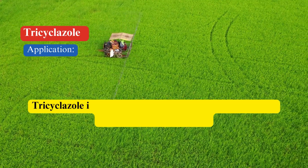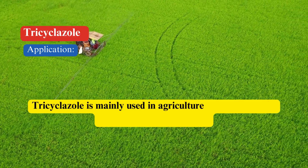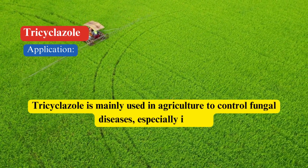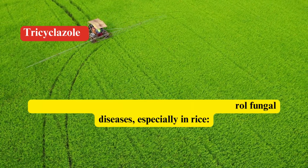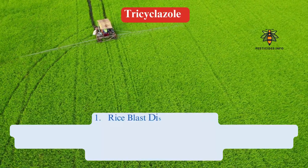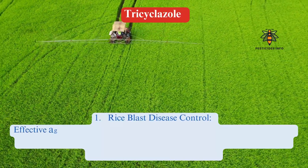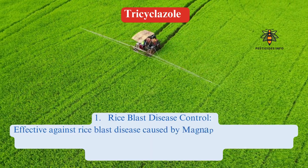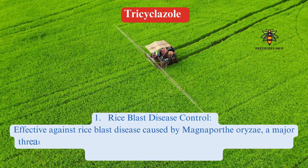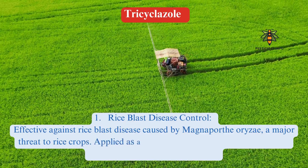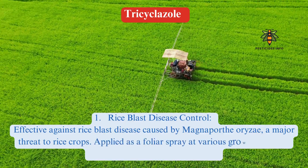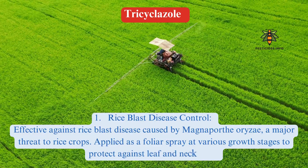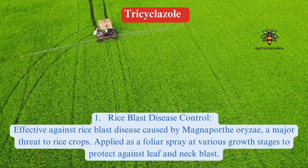Uses: Tricyclozol is mainly used in agriculture for the control of fungal diseases, particularly in rice cultivation. Rice Blast Disease Control: Tricyclozol is highly effective against rice blast disease caused by Magnaporthe oryzae. This disease is one of the most destructive diseases affecting rice crops worldwide, leading to significant yield losses.